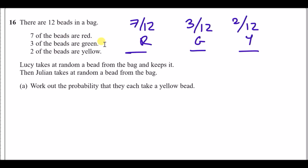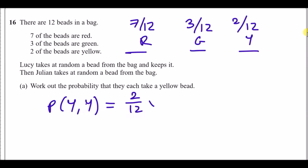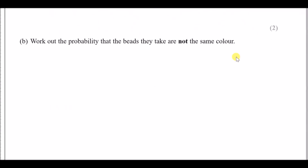Number 16: there are 12 beads in a bag — 7 are red, 3 are green, and 2 are yellow. For probability questions, always note down the probabilities of every possible scenario. Lucy takes a bead at random and keeps it, so the total drops from 12 to 11, then Julian takes one. The probability they each take a yellow bead is 2/12 times 1/11, since after Lucy takes a yellow there's only one yellow left — giving a simplified answer of 1/66.